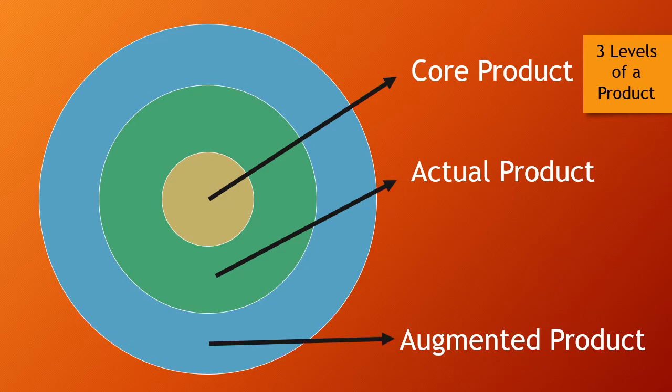The core product is not the tangible, physical aspect — you can't touch it. The core product is the benefit that makes it valuable to the consumer; it deals with what is bought by the consumer. For example, if you buy an Apple iPad, you're buying more than just a tablet computer. You're buying entertainment, self-expression, productivity, and connectivity with your family and friends. You're buying this connectivity — this is the benefit of owning and using the product.